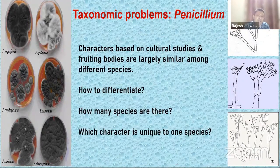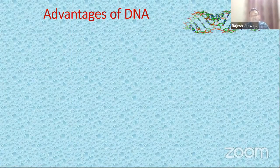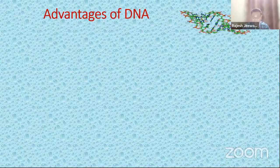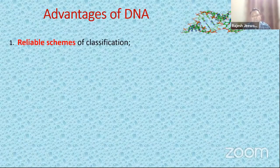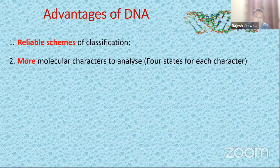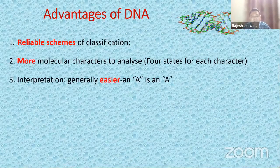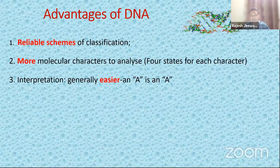The advantage of using DNA: many mycologists and fungal taxonomists are now using DNA to resolve problems related to taxonomy. With DNA, you get a more reliable scheme of classification. You've got more molecular characters to analyze — one character can have four different states: A, C, G, T. It's very easy to interpret. If you have an adenine, it is an adenine. But with a particular morph, someone might say it's a round shape while another says it's oval-shaped — we don't have that problem with DNA.